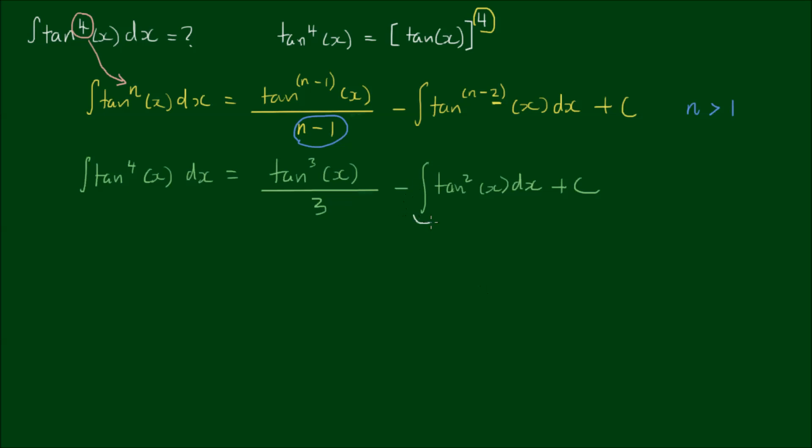So what we need to do now is to find the integral of tan squared of x. And I've done this in a previous video as well, which I'll link in the top right hand corner here. The result of this integral is the tangent of x minus x.